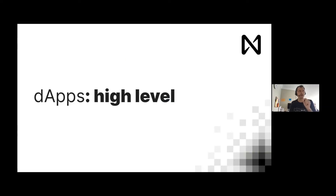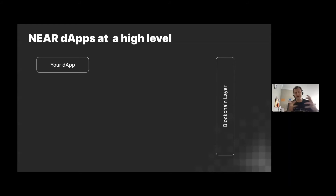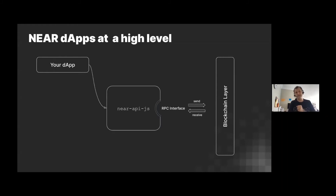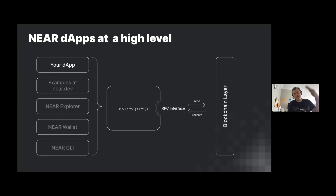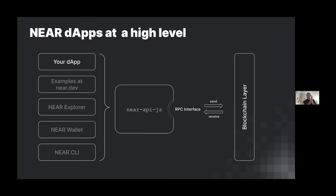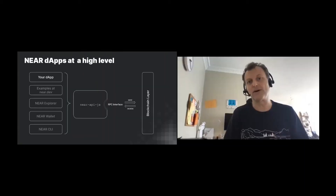Let's talk about dApps at a high level. You've got your dApp, the blockchain layer, and the RPC interface — JSON over HTTP, moving JSON packets back and forth. We wrap that for you with near-api.js, so from your application you're just writing JavaScript, similar to ethers.js or web3.js. You can also communicate directly with the RPC API. We use exactly the same interface for all our applications, examples at near.dev, our explorer, wallet, and CLI — eating our own dog food.